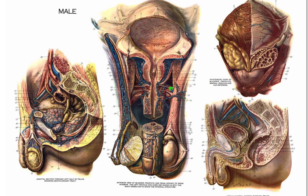This muscle stretched across below the prostate gland is the muscle that forms the constriction of the external urethral sphincter. The name for the urethra as it passes through this muscle is the membranous urethra. Then it enters the penis and runs within the corpus spongiosum, where it is called the spongy urethra or the penile urethra.